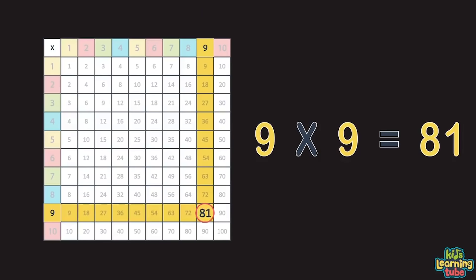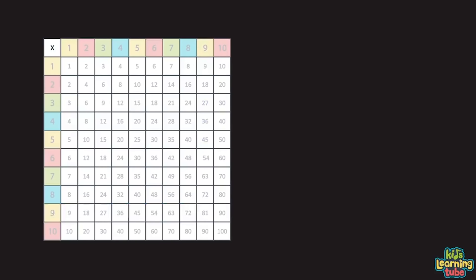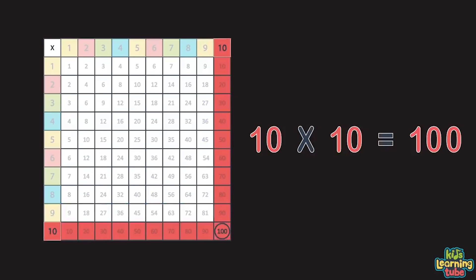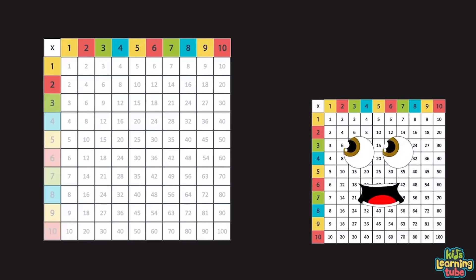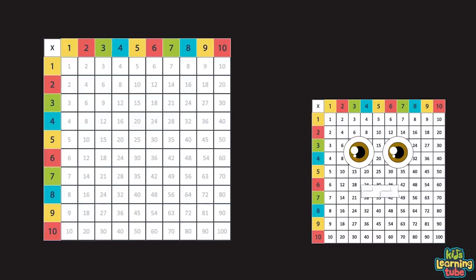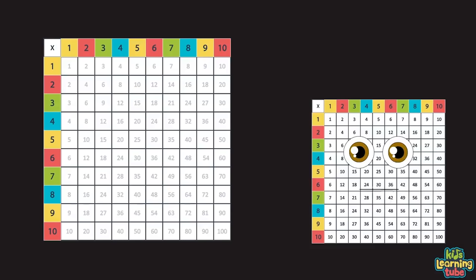Nine times nine equals eighty-one. And ten times ten equals one hundred. You can see here in red. You can move across or down and multiply each number on its own. Let's try a couple out, then you can continue at home.